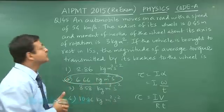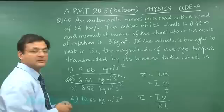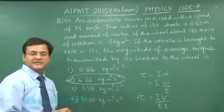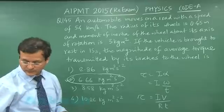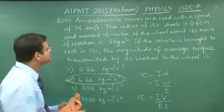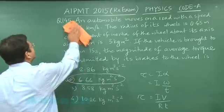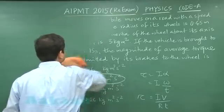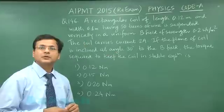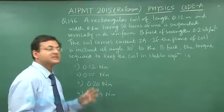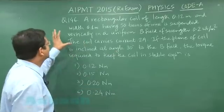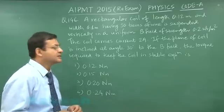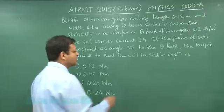We will be marking answer 2 for question 145. Now switching to the next question, question 146, which is based on the formula torque = μ × B, where μ is the magnetic moment.